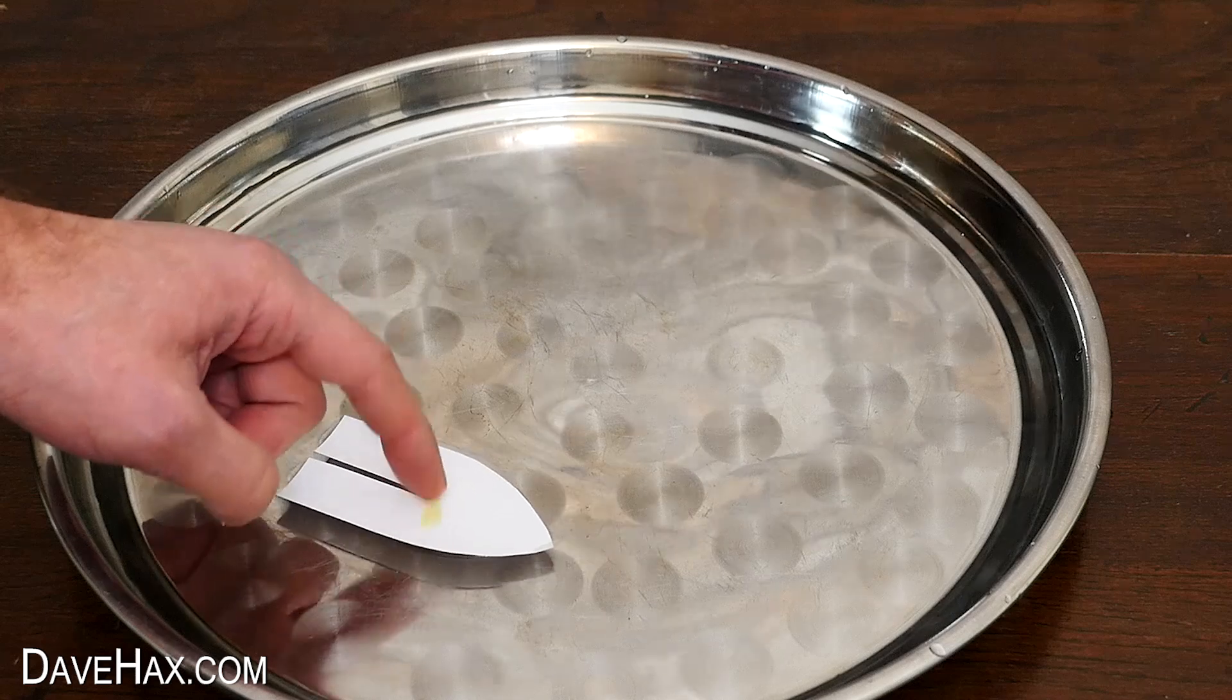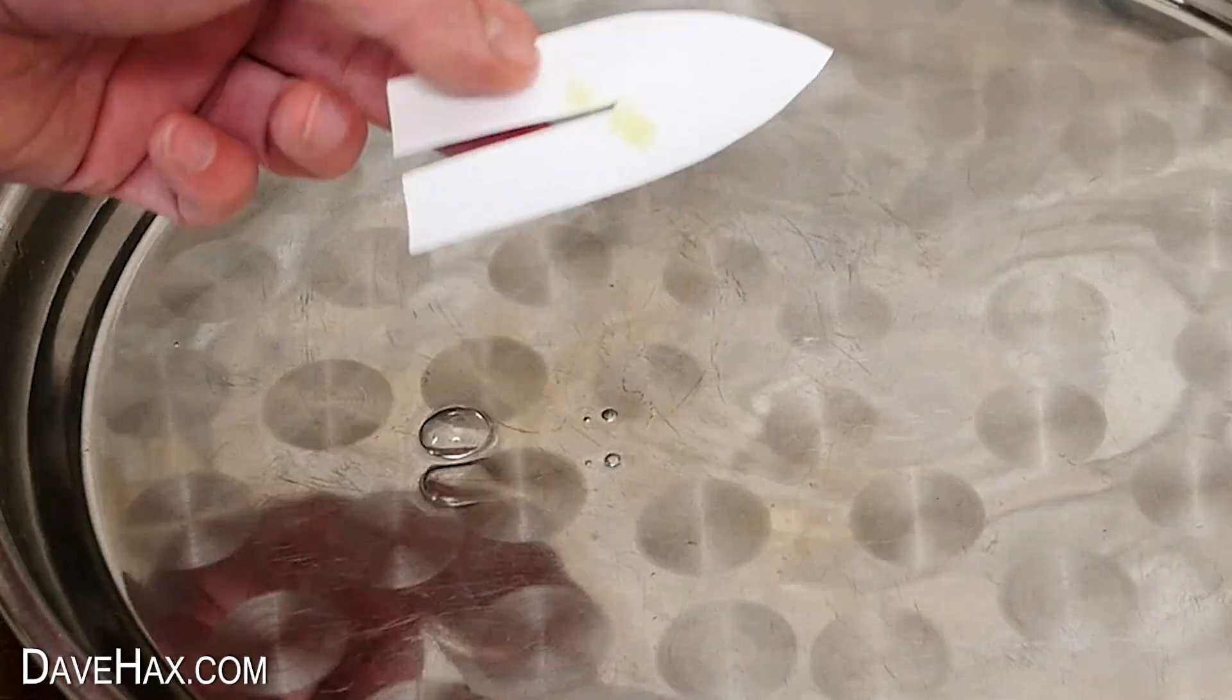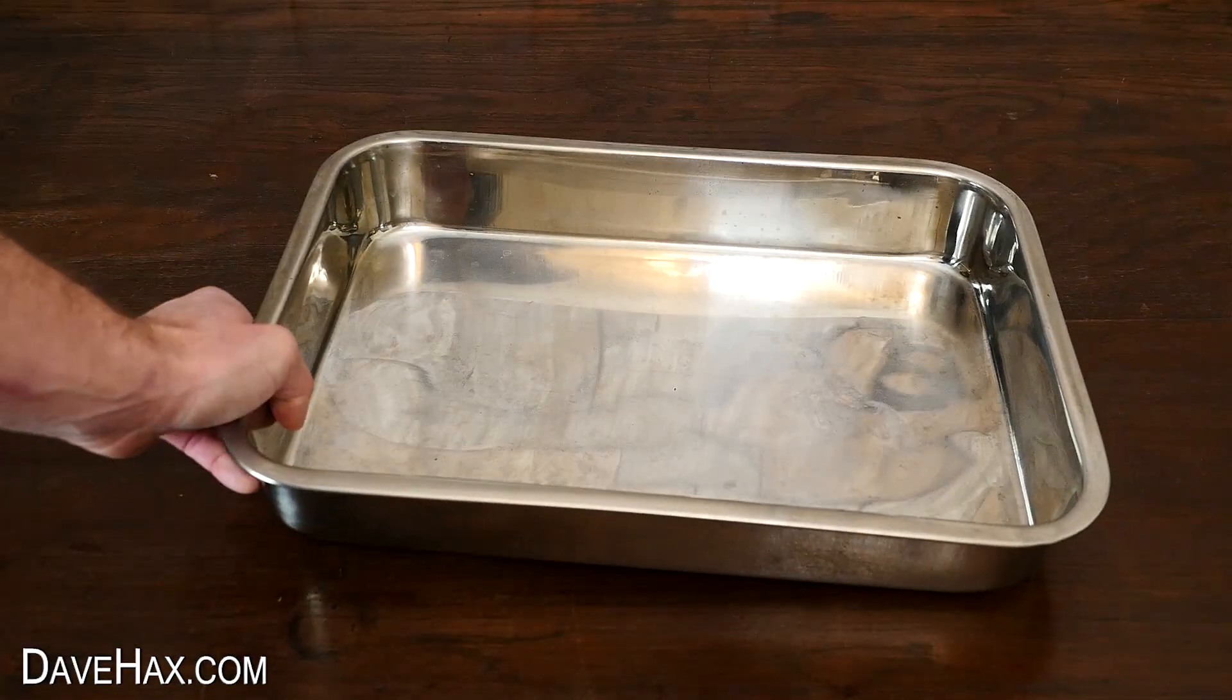And even if we dab a bit more soap into the channel, nothing really happens. To reuse it we need to change the water, removing any trace of soap, or do it again on a fresh tray.